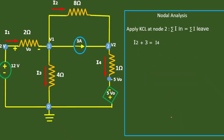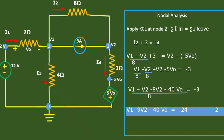Now we apply KCL at node 2. At node 2, I2 is entering, 3 amps is entering, and I4 is leaving, so: I2 plus 3 equals I4. Applying Ohm's law, I2 is (V1 minus V2) divided by 8 ohms, and I4 is (V2 minus (minus 5V0)) divided by 1, which becomes V2 plus 5V0.